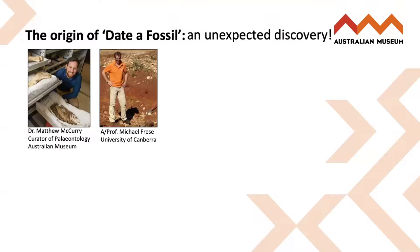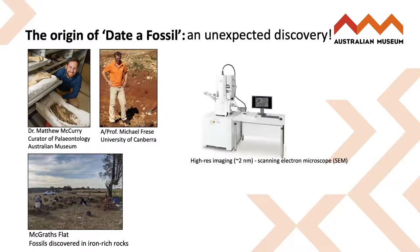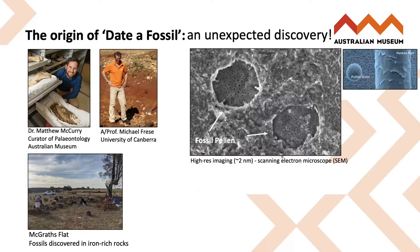In 2018, Matthew and Michael, our team leads, had been investigating fossils in some iron-rich rocks from a newly found site called McGrath's Flat. To do this, they were using high-resolution imaging known as scanning electron microscopy, or SEM. During one of Michael's SEM sessions, he discovered fossilised pollen in the rock sample.